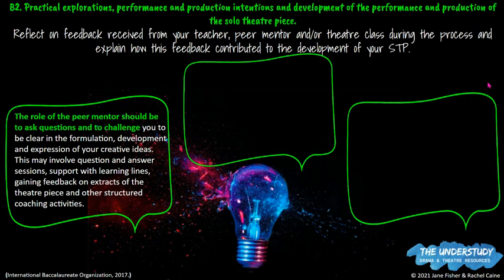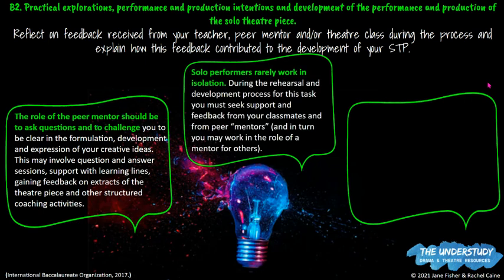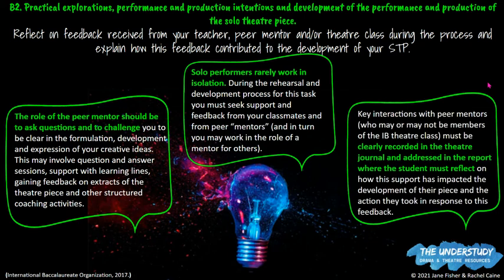For Criterion B, you should also record your developing ideas for your solo performance and reflect on interactions with peers. You'll barely work in isolation during a solo performance — get feedback from people in class or outside, and record it. Perhaps you have someone helping you learn your lines, or getting feedback on the text you've selected. Record key interactions and address in the report how this feedback impacted how you developed your piece. If a teacher said something wasn't clear, explain what you did to go back and make it clear for your audience.